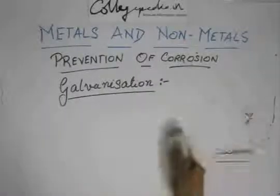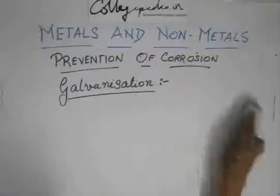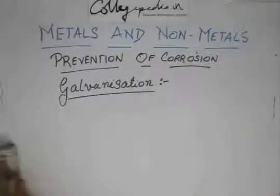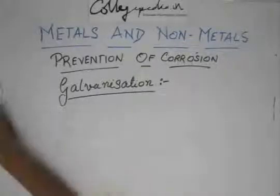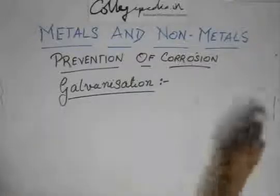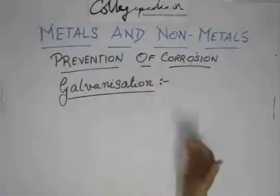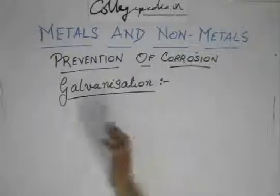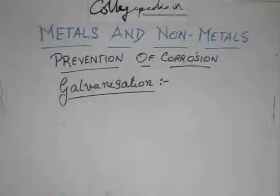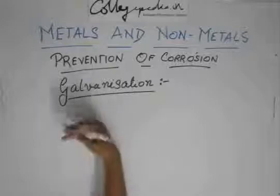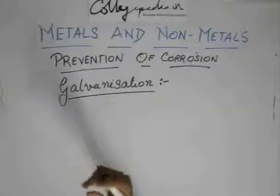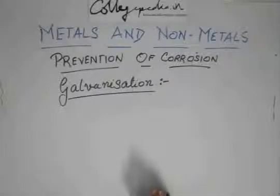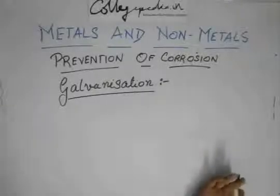If a question comes about how galvanization prevents corrosion, you will write that zinc will sacrifice itself since it is more reactive, and it will get corroded instead of iron. And due to this, even if there is a scratch or the zinc layer is broken somewhere, still the iron will not get corroded because the zinc will react first.